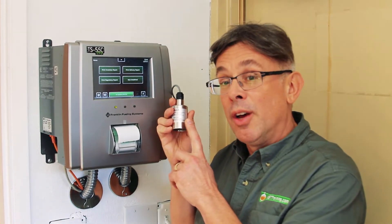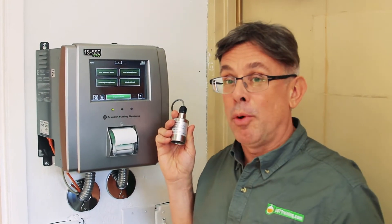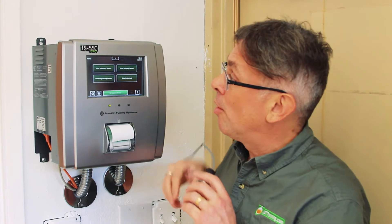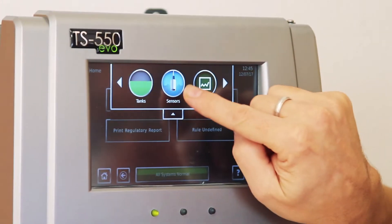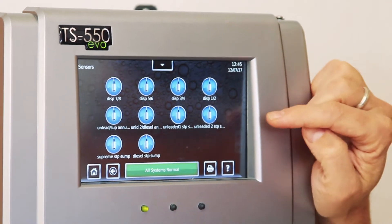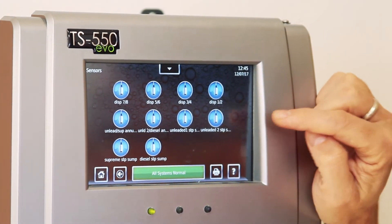This is looking for liquid fuel or water where it's not supposed to be. At this particular EVO 550 site, we click on the quick jump button, we click on the sensor button, and we see that this site has interstitial sensors.